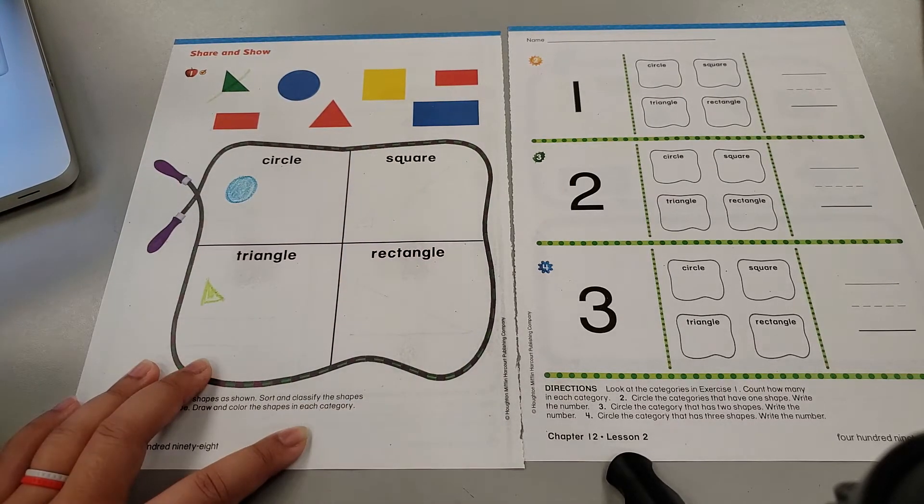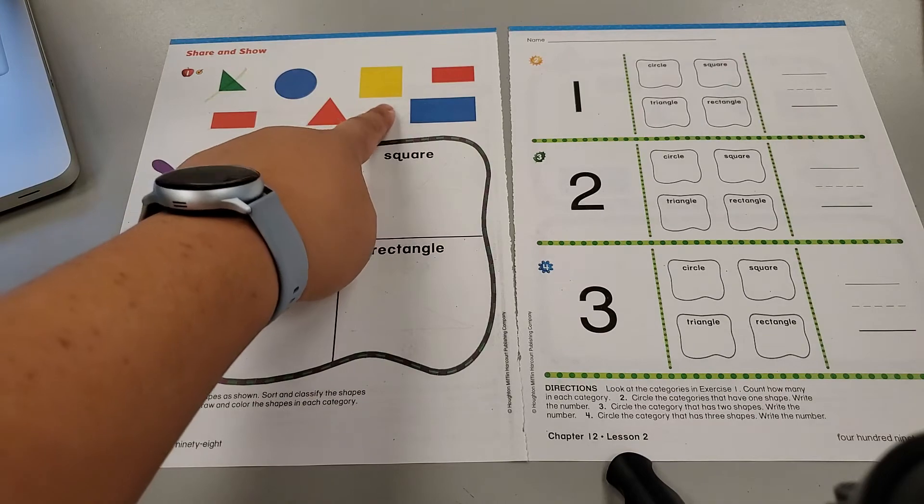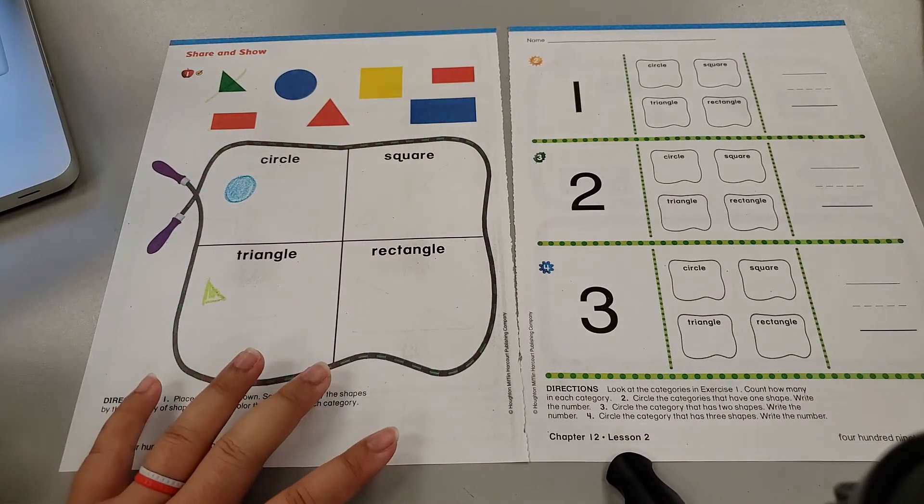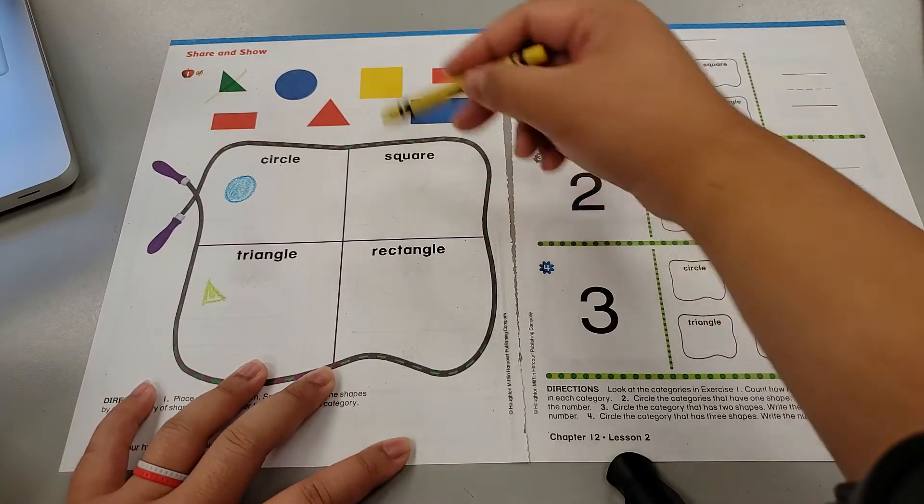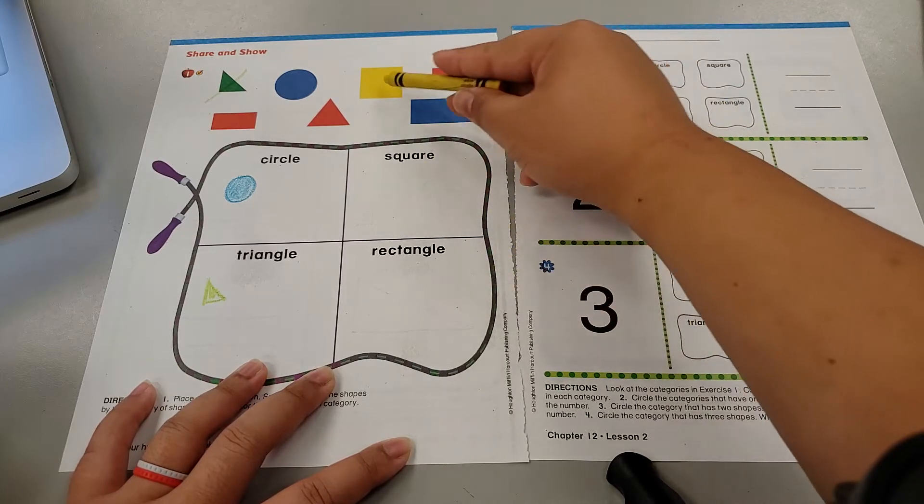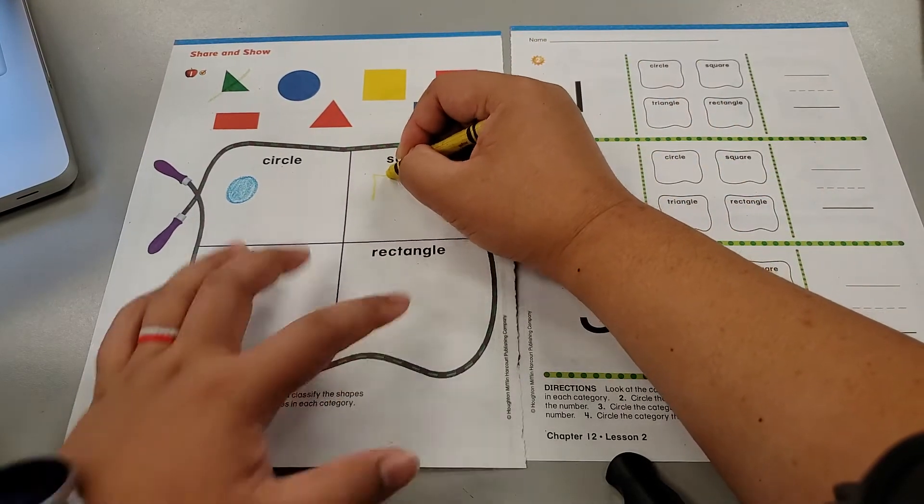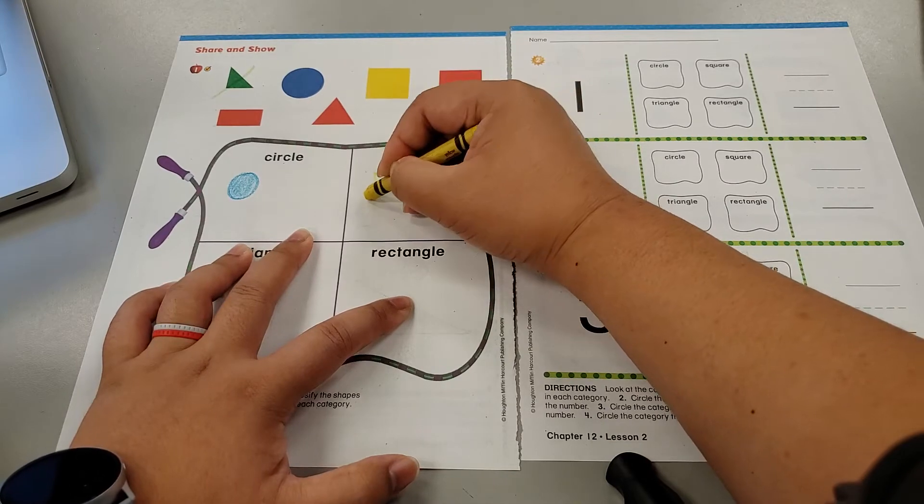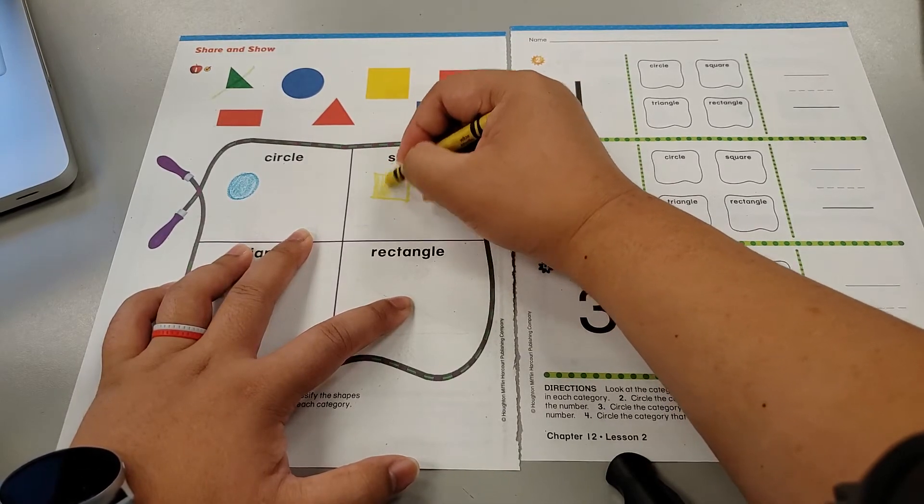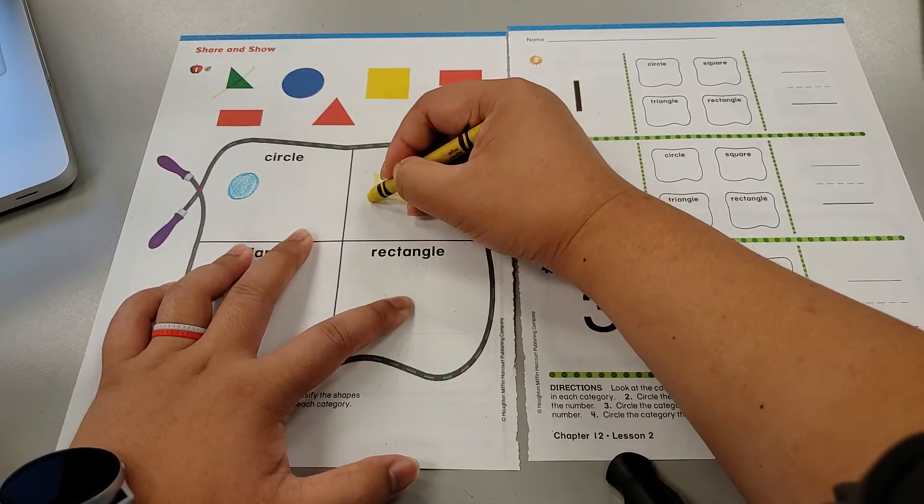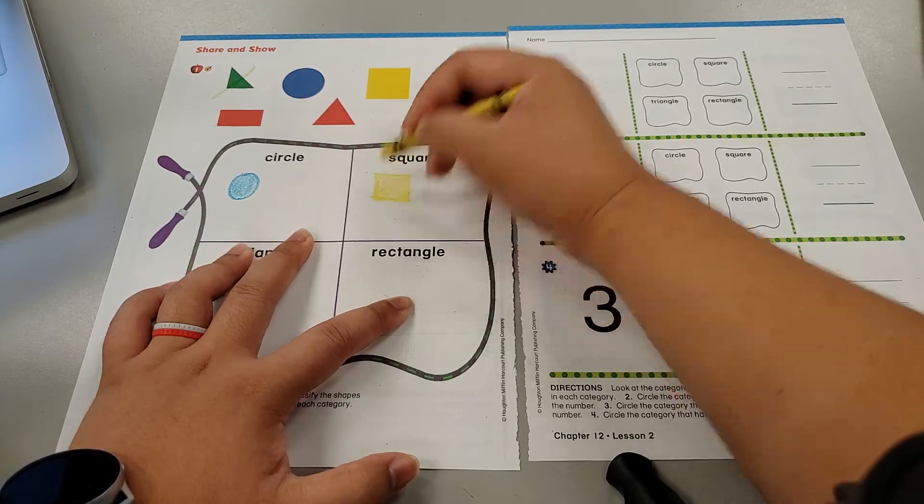Squares. Now remember squares are a very special kind of rectangle because the sides are all the same. So it cannot live here. It is all even. So we're going to put the square, the yellow square to live in a square area.